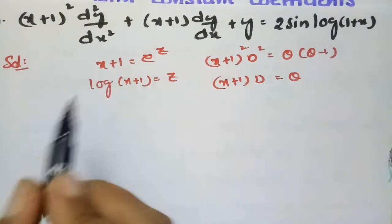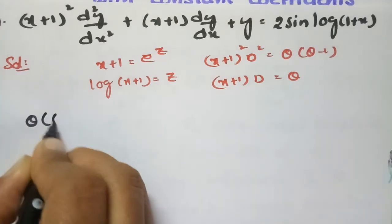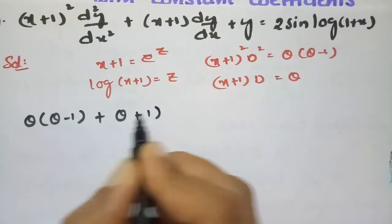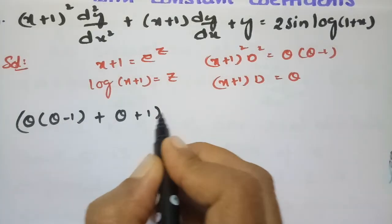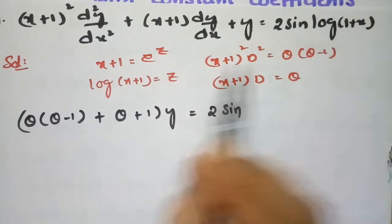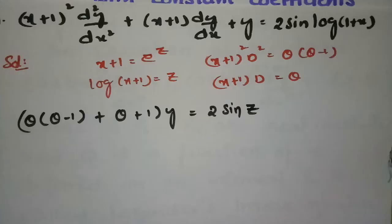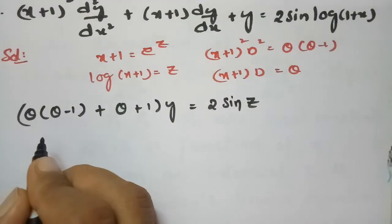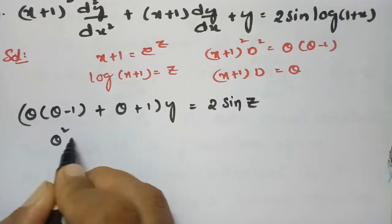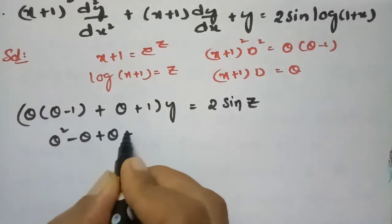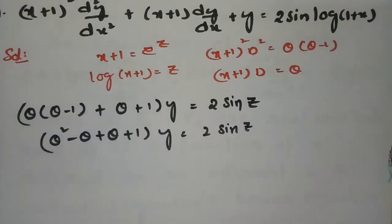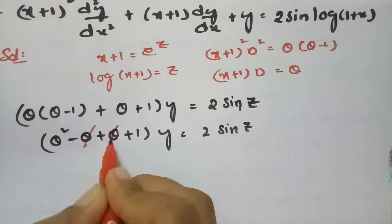So (x + 1)² d² can be written as θ(θ - 1), and this can be written as (θ + 1)y. Here plus 1 of y is equal to 2 sine of — in place of log(1 + x), what is log(1 + x)? This is z. So now this is transformed into this linear equation. This is θ² - θ + θ + 1 of y equals 2·sine z.